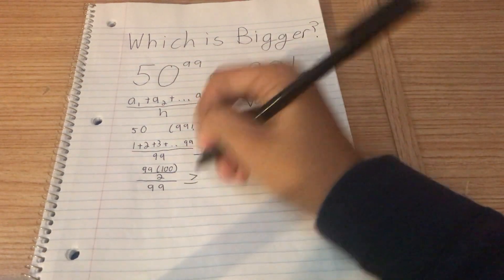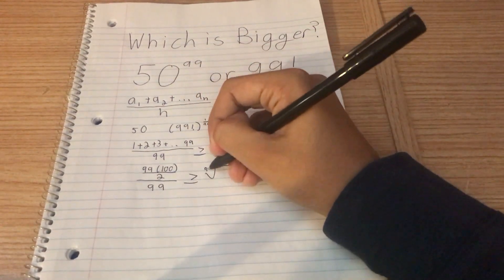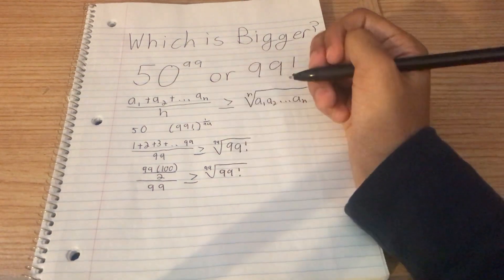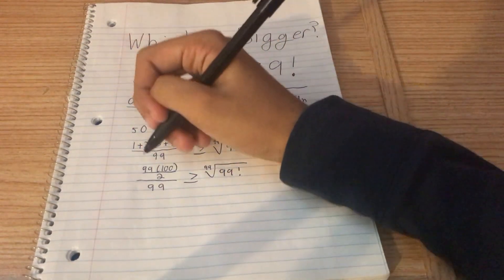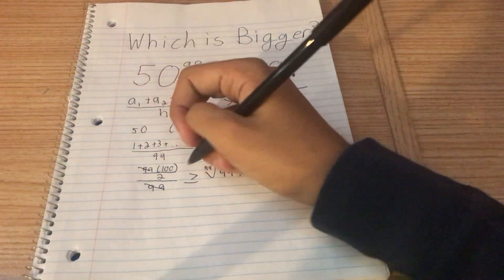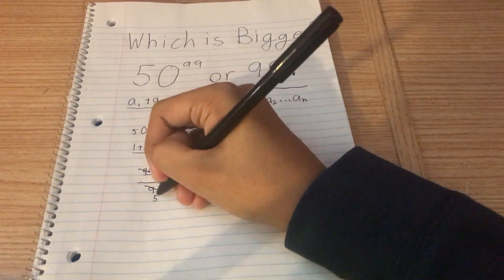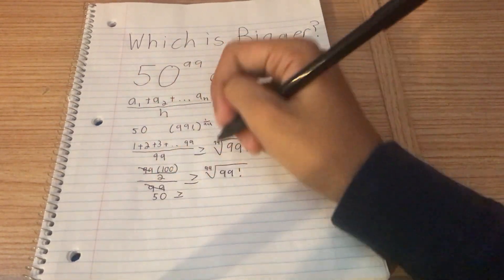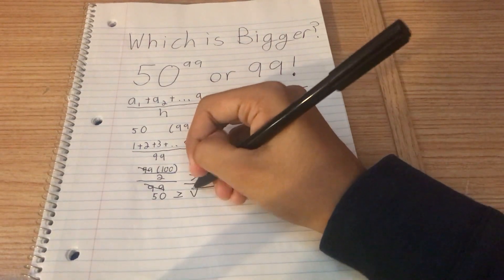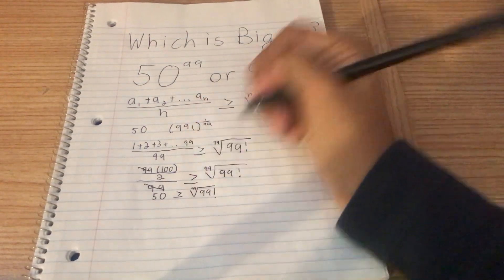And again, that is greater than or equal to the 99th root of 99 factorial. So we can cancel some stuff out on the left-hand side. The 99 and the 99 cancel. 100 divided by 2 is 50.